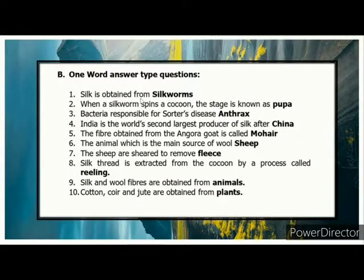One word answers: Silk is obtained from Silkworms. When the silkworm has been encased, that stage is known as Pupa. The bacteria responsible for the cattle disease Anthrax. India is the world's second largest producer of silk after China. The fiber obtained from the Angora goat is called Mohair. The animal which is the main source of wool is Sheep.